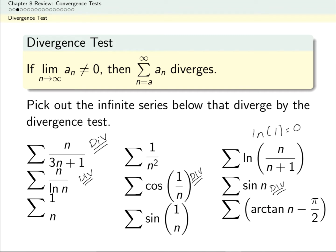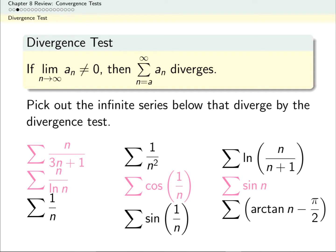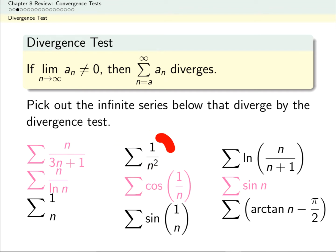So the divergence test gives us four series right off the bat. An important thing to remember is that the divergence test can never show that something converges. A nice example: in two cases the terms being added are going to zero, but in one case the sum climbs to infinity, and in the other the sum is finite.